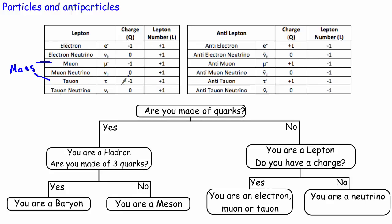We also have six types of anti-leptons: the anti-electron (or positron), the anti-muon, and the anti-tauon have exactly opposite charges to their counterparts — so they have a charge of plus one. There are also corresponding anti-neutrinos: an anti-electron neutrino, an anti-muon neutrino, and an anti-tau neutrino, which have a charge of zero. Because they are anti-particles, instead of a lepton number of plus one they have a lepton number of minus one. These leptons don't combine to make different types of particles — in that sense they are a little bit easier to think about.